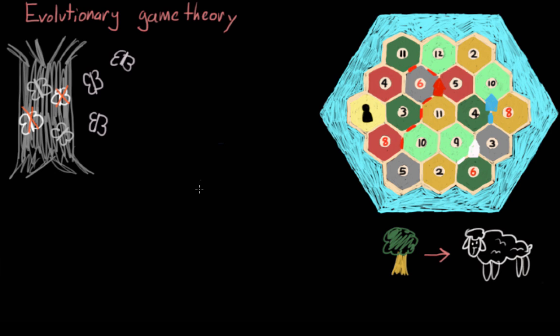And the important part here, at least as it relates to game theory, is that reproduction part. Because that part can't happen in isolation, it needs to involve others.